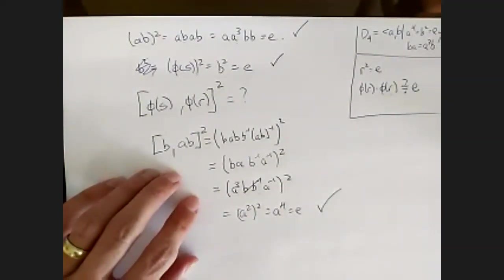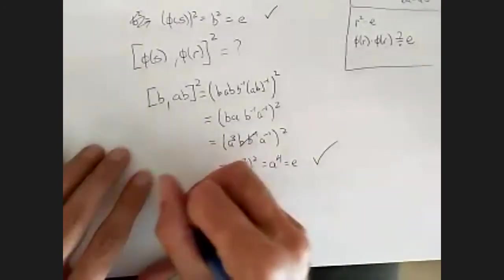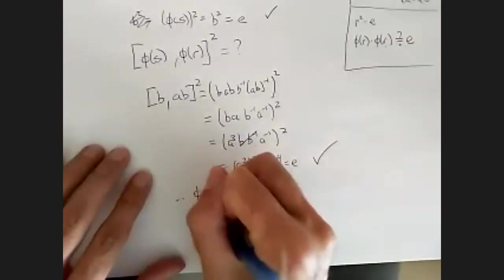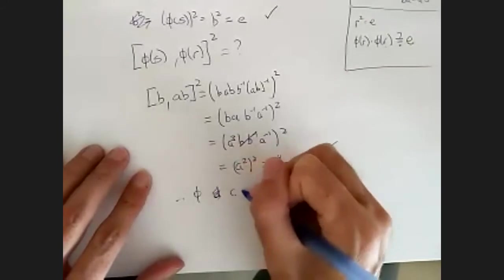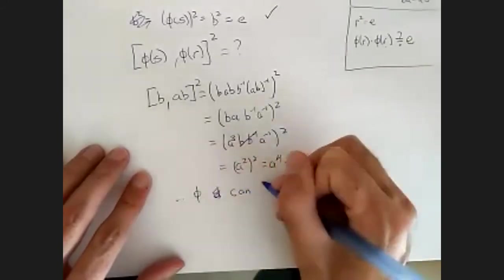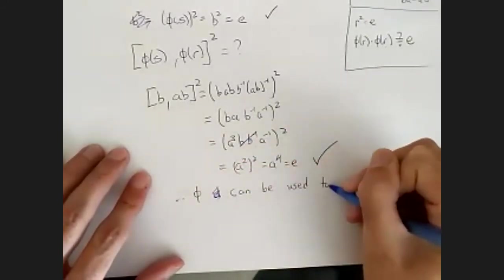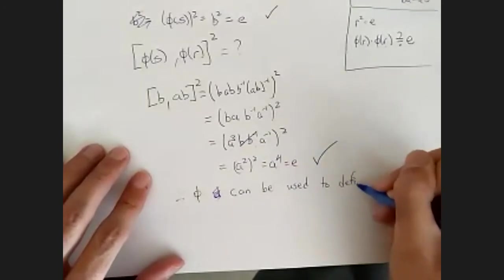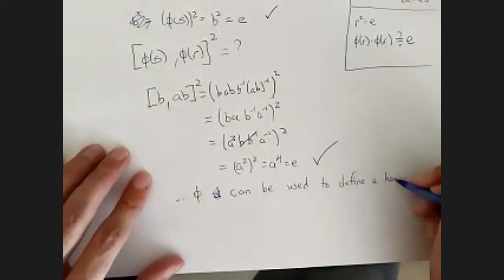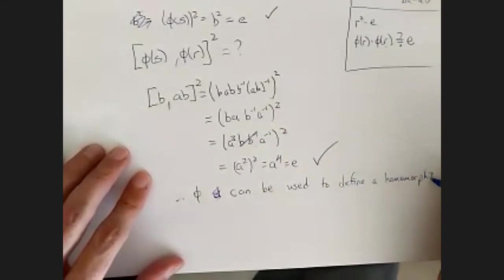At this point, therefore, phi can be used to define a homomorphism. And that's what I was looking for for this question.